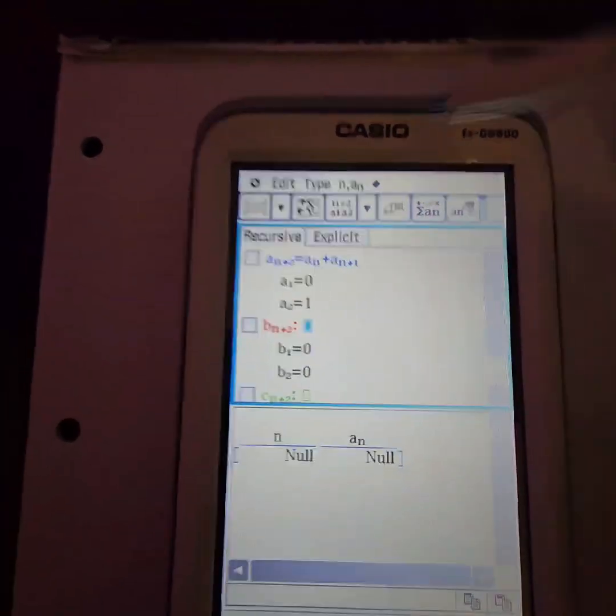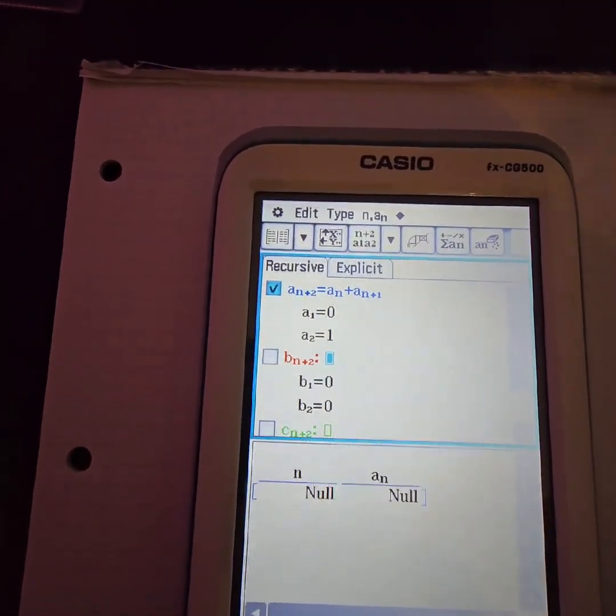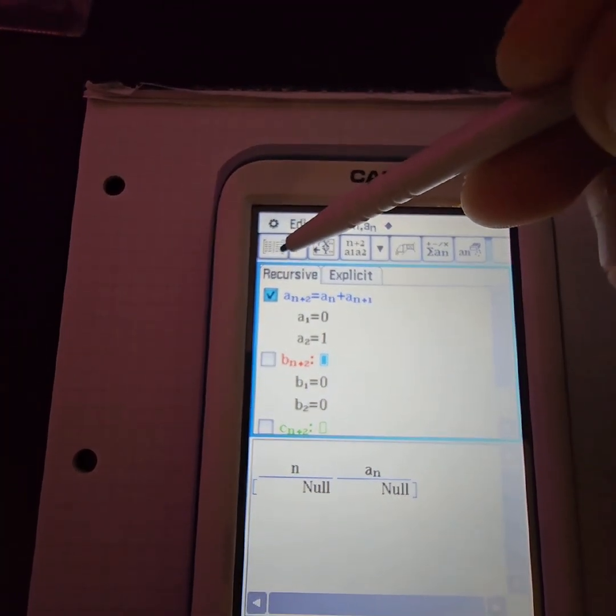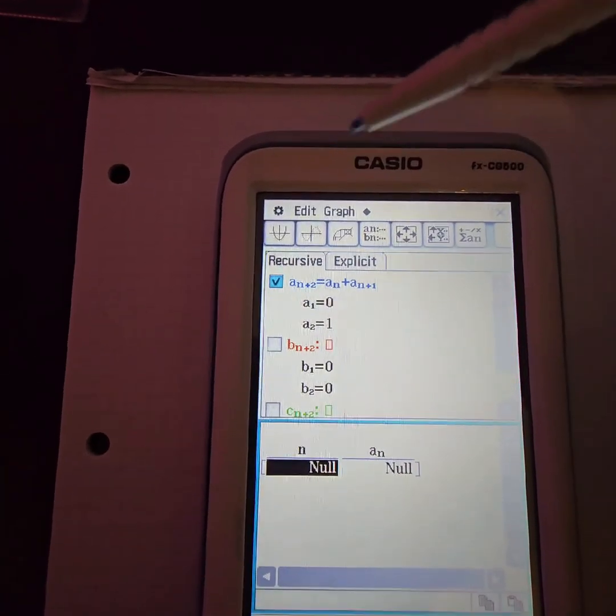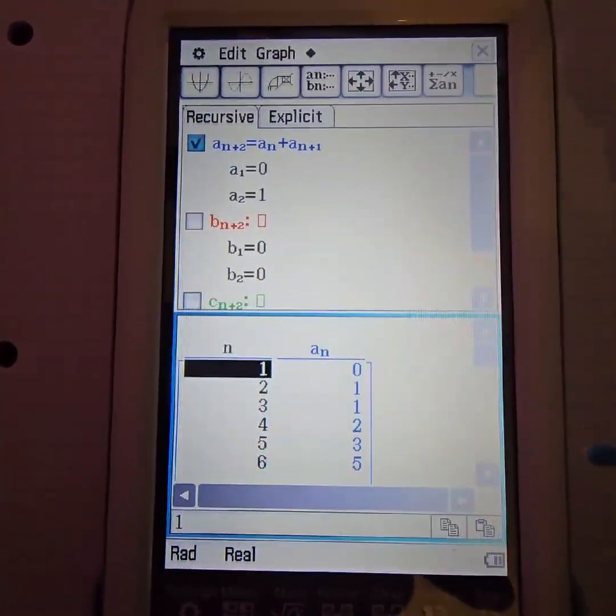To generate the sequence you click this box over here, you put a tick there and then you select this option up here, and that sequence is generated.